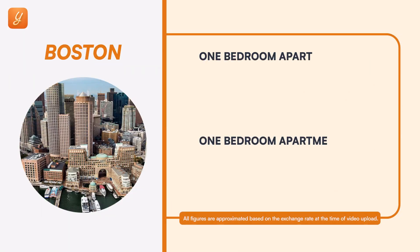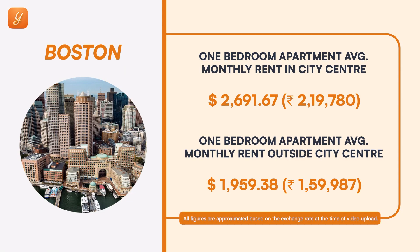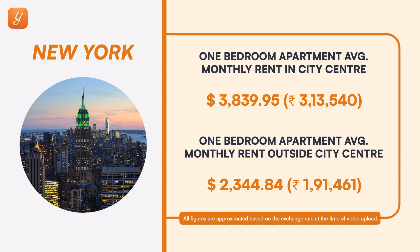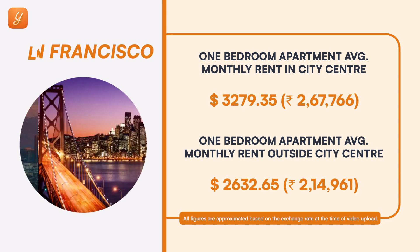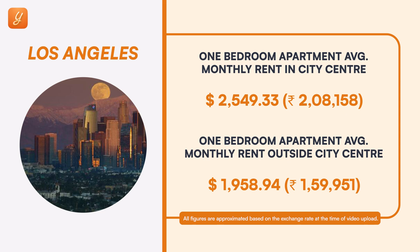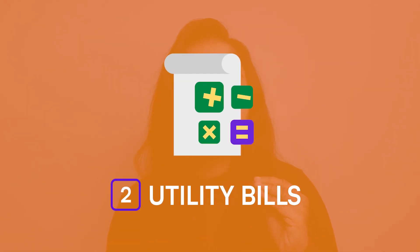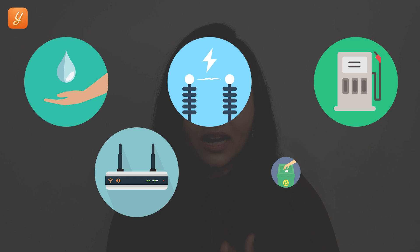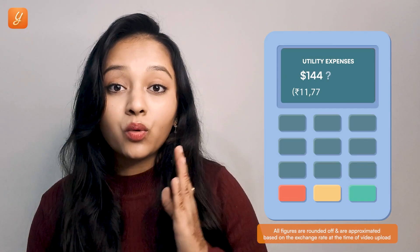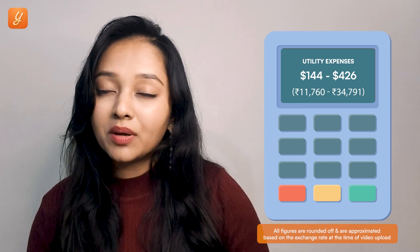Popular student city-wise rent will now appear on your screen. The next big expense is utility bills, which are made up of many small expenditures like water, electricity, gas, Wi-Fi, garbage disposal, etc. The utility expenses should cost you around $144 to $426 per month.